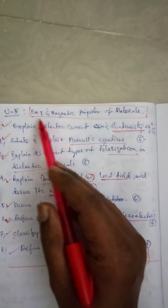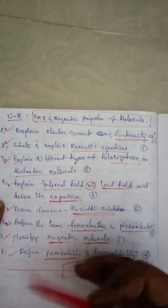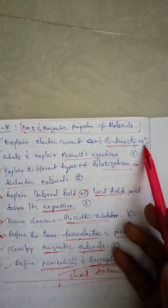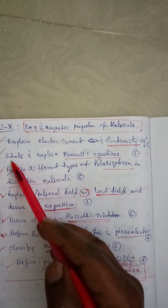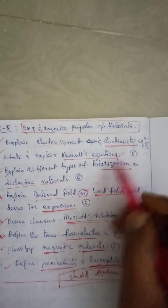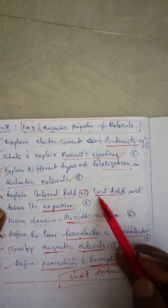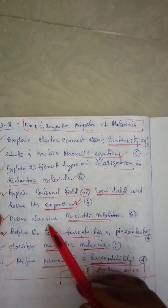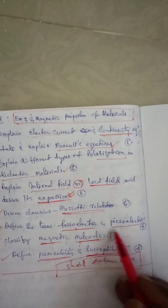For Unit 5 - Electromagnetic Induction and Magnetic Properties of Materials, which is a very large unit: the first question is 'Explain electric current and the continuity equation,' carrying six marks — very very important. The second is 'State and explain Maxwell's equations.' The third is 'Explain different types of polarization in dielectric materials.' The fourth is 'Explain internal field or local field and derive its expression' — also very very important.